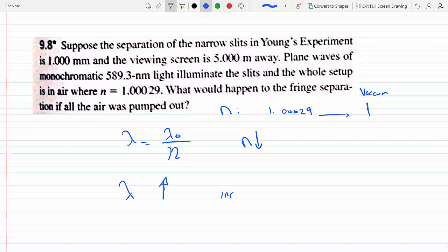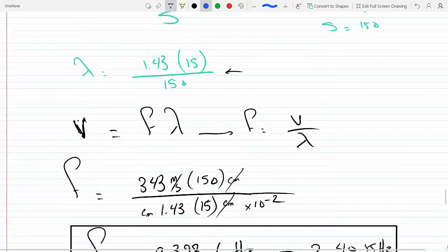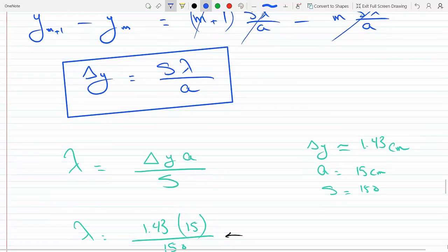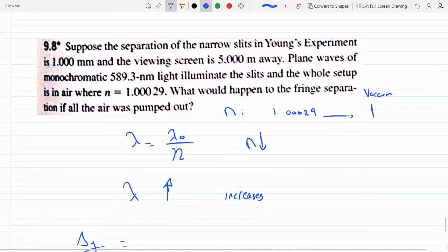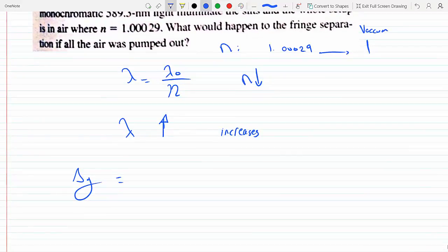And we know that the separation is equal to, as we did in the previous question, s lambda over a. So the separation between the fringes is equal to s, which is the distance between the receiver and where the slits are placed, lambda is the wavelength, and a is how far the slits, the double slits, are from each other.